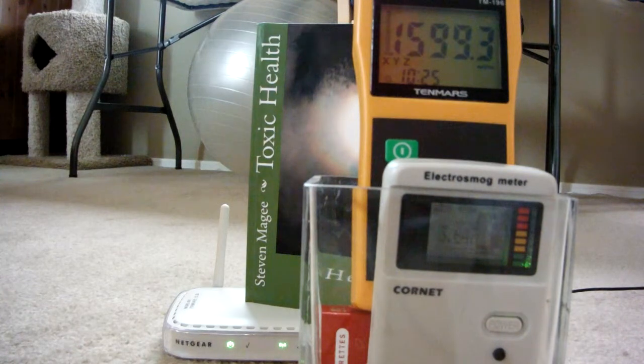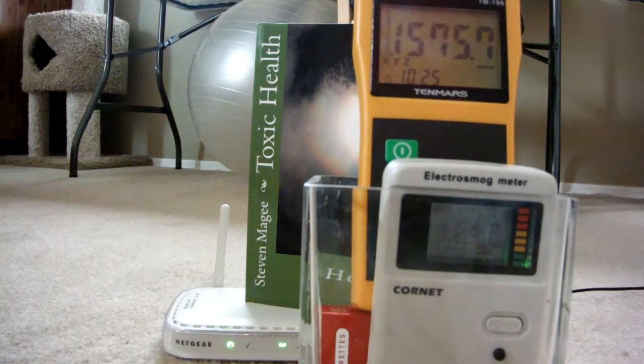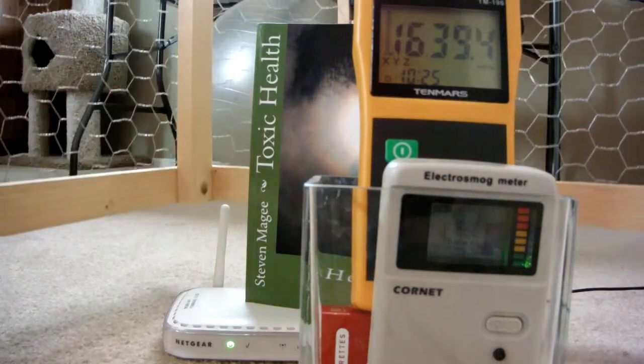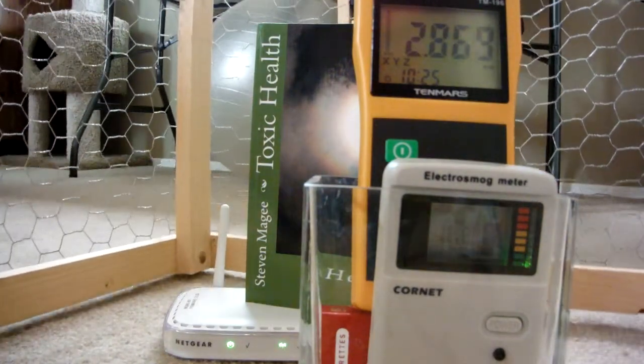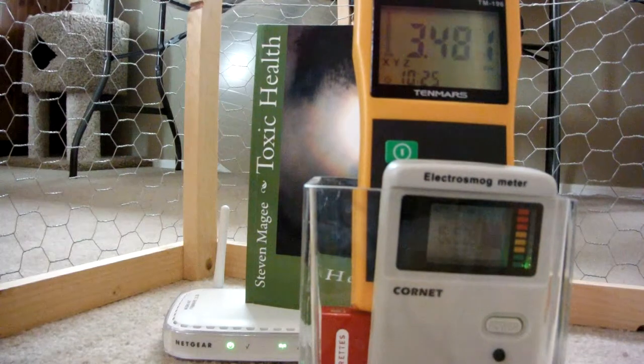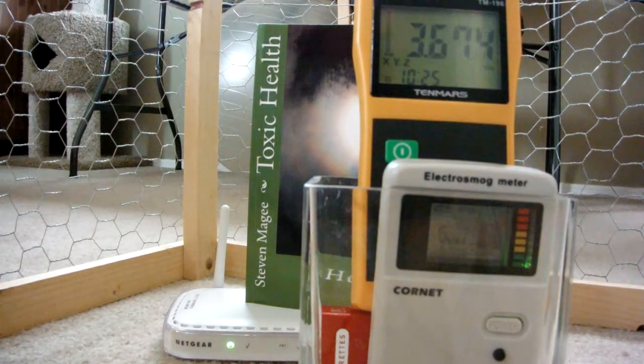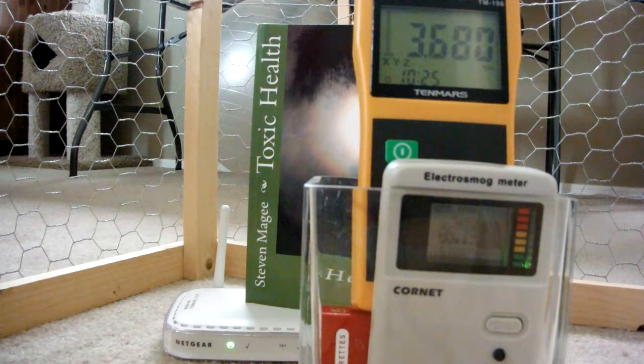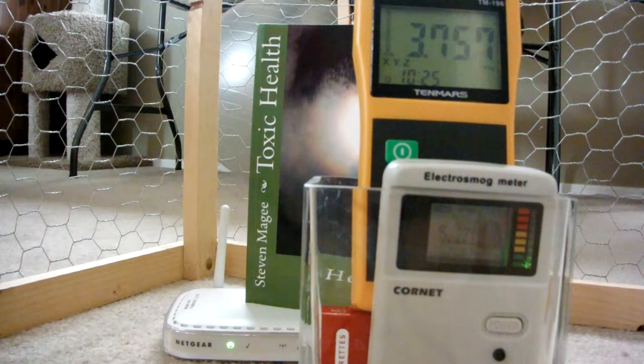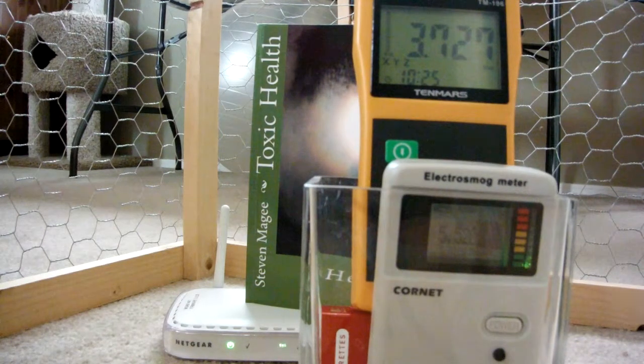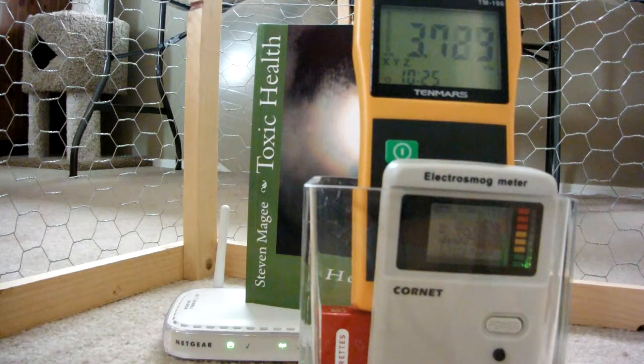I'm going to put everything inside this chicken wire Faraday cage and I want to see what happens. My home is extensively made out of chicken wire with it being a stucco home and I've been wondering how that interacts with wireless radiation. As we can see, the meter readings have gone very, very high.